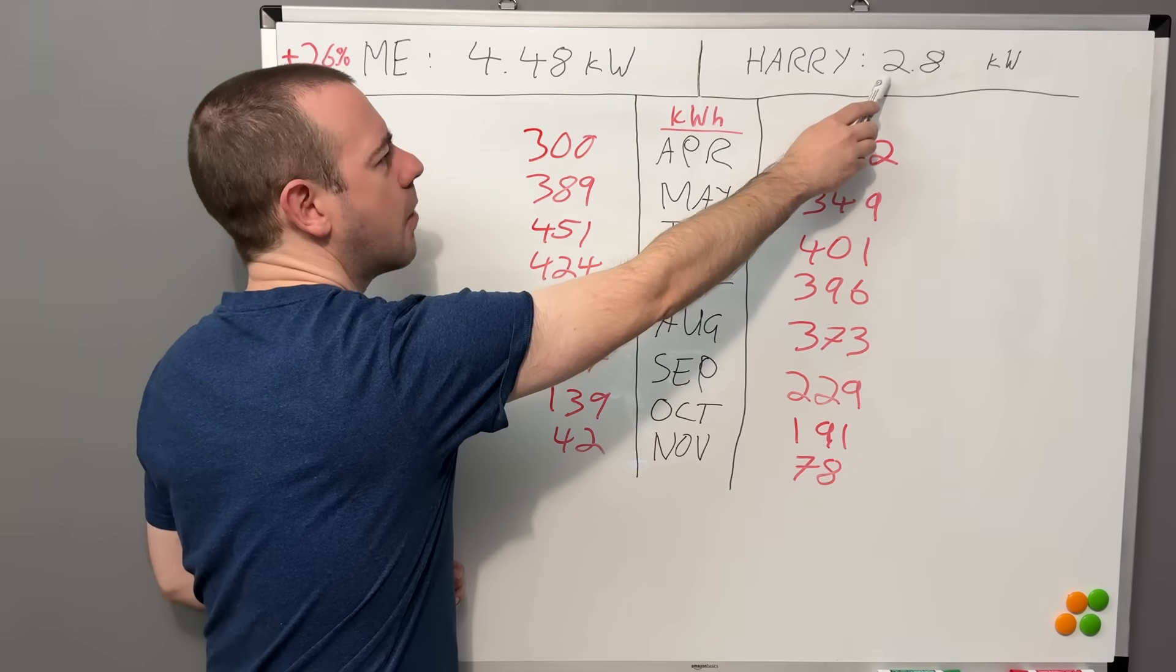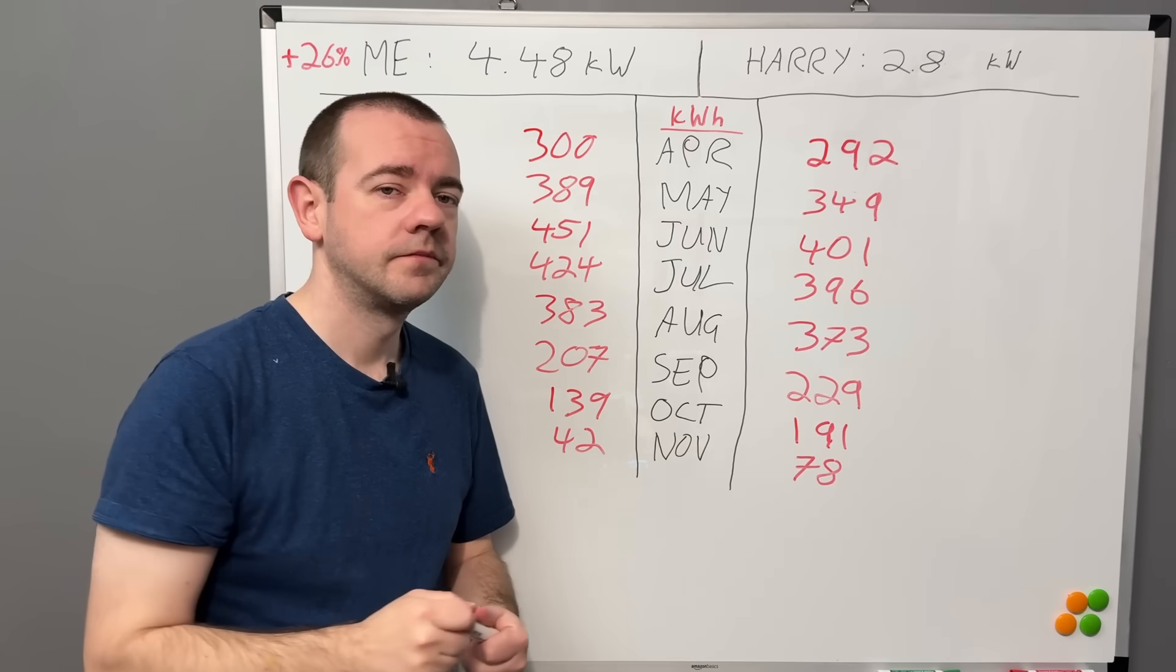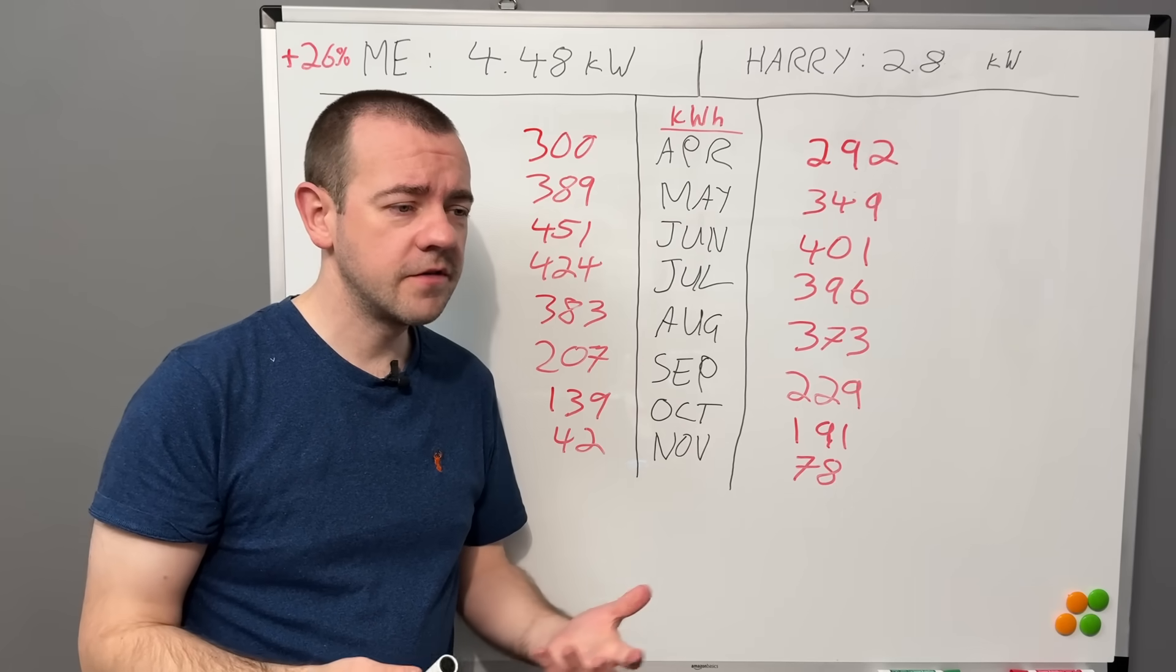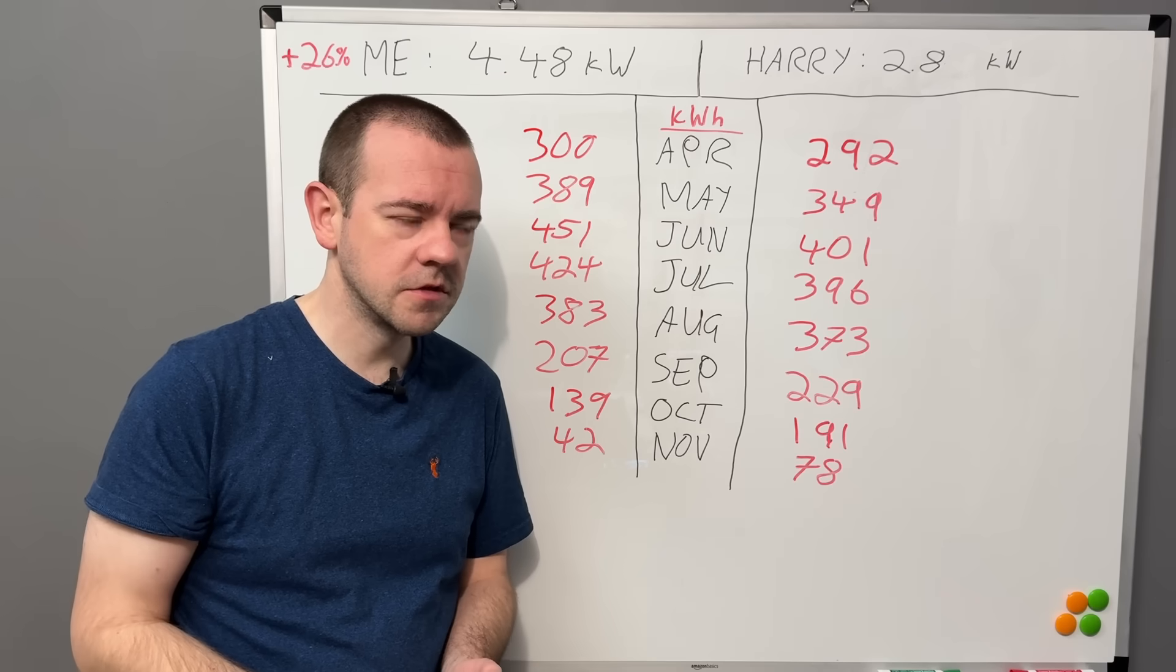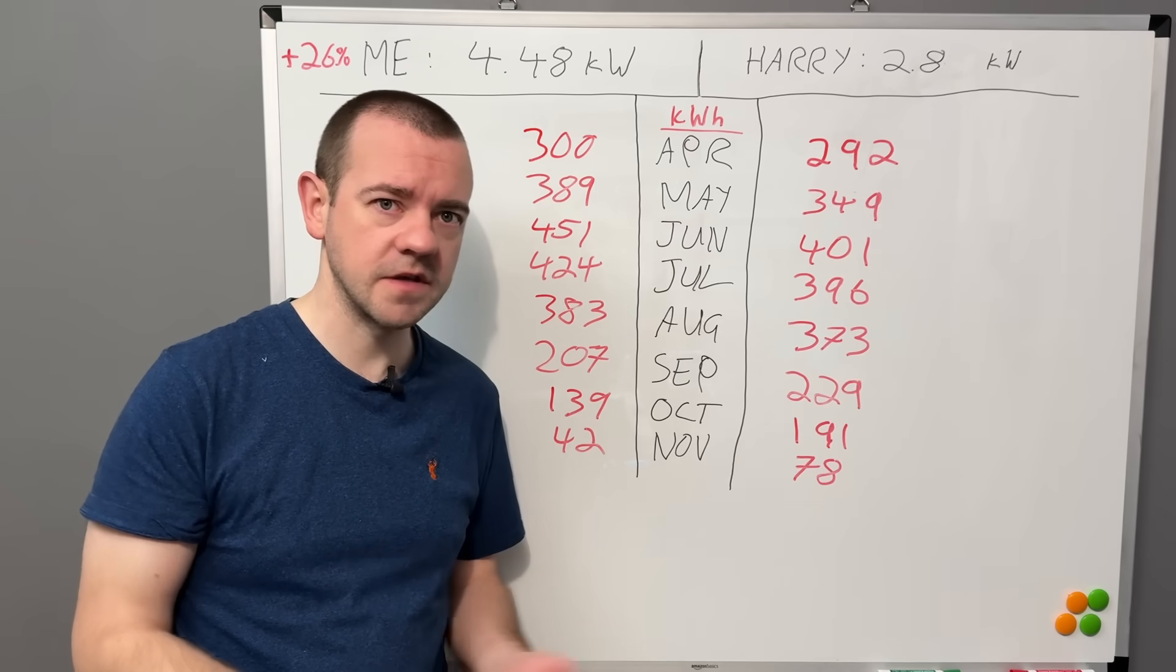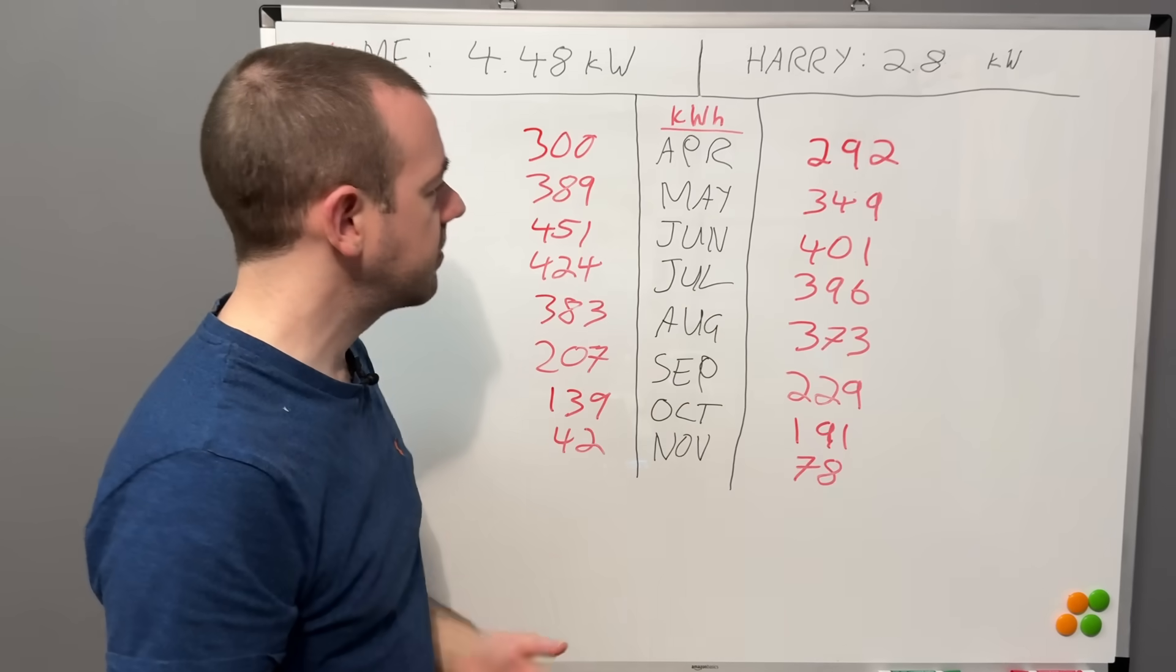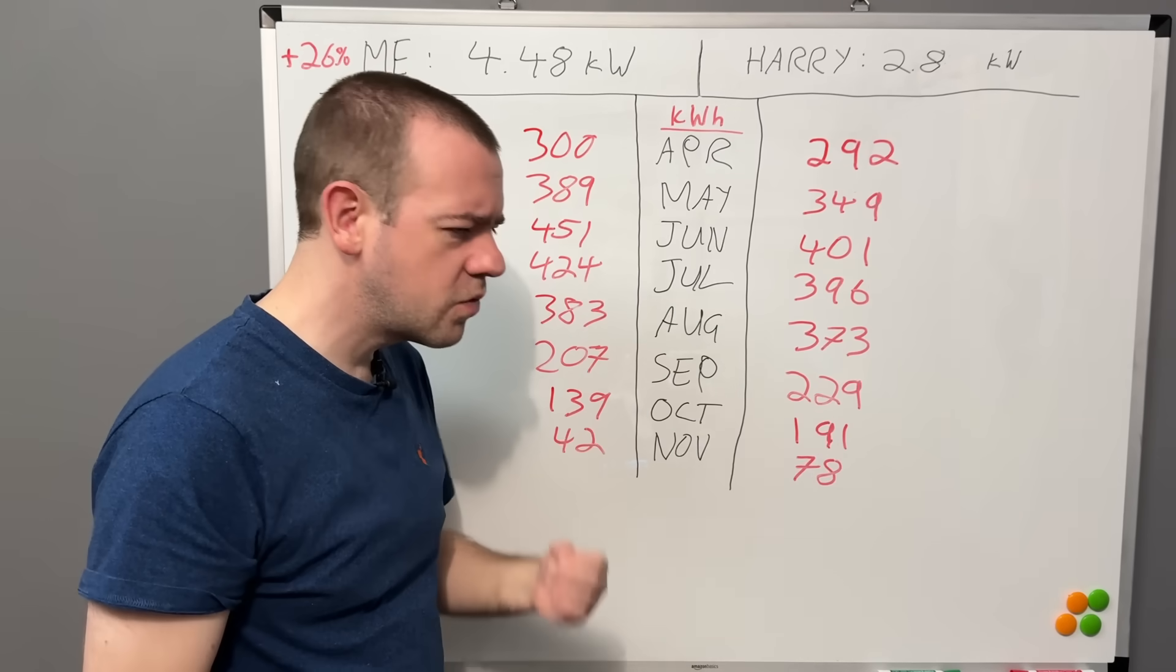September, the sun's starting to go in now. I've generated 207, he's got 229. So he's generated more than me, but look at the difference in the sizes. I mean it kind of makes sense, doesn't it? If you live in a sunny environment with a south facing roof, you go for a different system to a dull environment with an east-west facing roof.